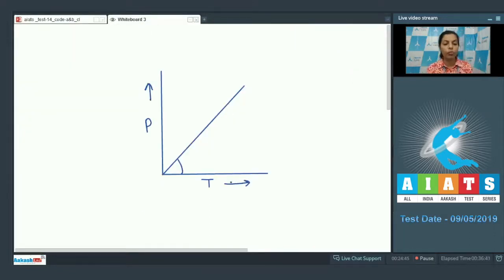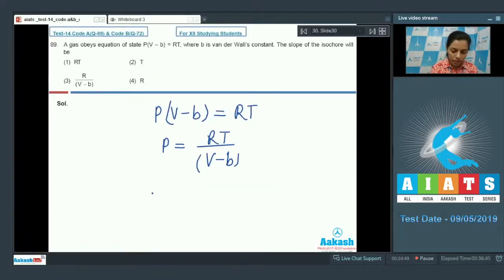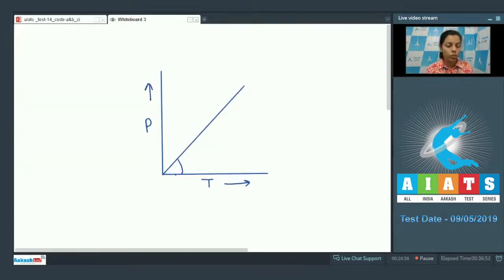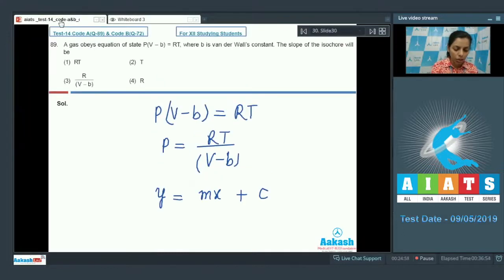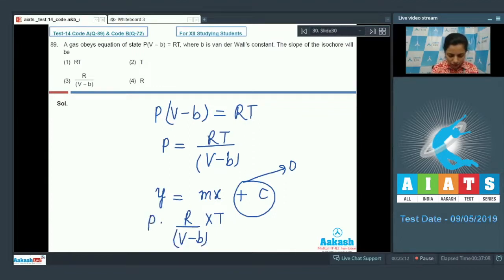And now if we compare this with the equation of straight line, y equals mx plus c. In this graph there's no intercept, it means c is not here. So at x-axis I'm taking here T, then this is 0, I just assume here it is R by (V - b), and at y-axis I'm taking p. So we are plotting between pressure and temperature.